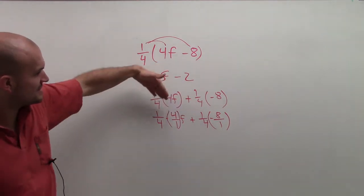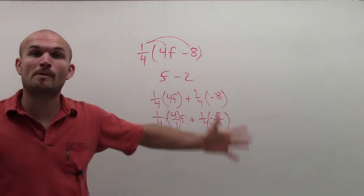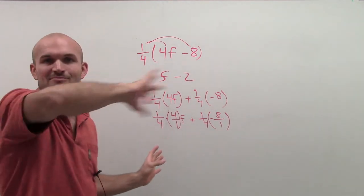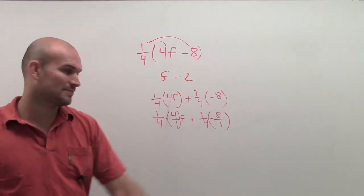So now you can see that. Now I have a fraction times a fraction. When we multiply fractions times fractions, remember, we just take our numerators, multiply across, and our denominators and multiply across.